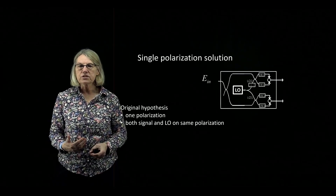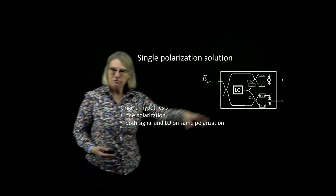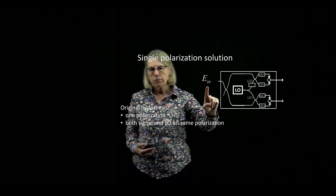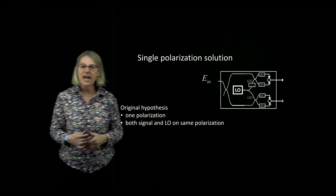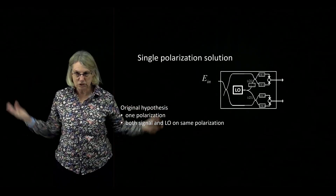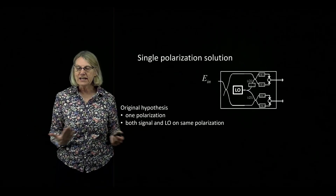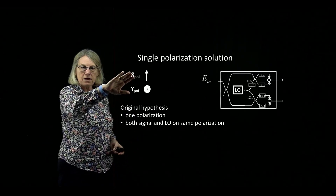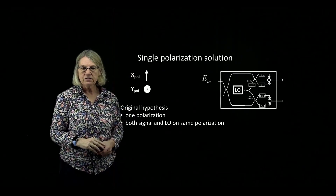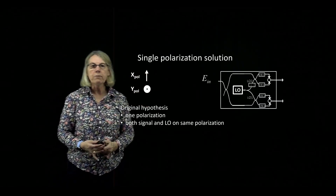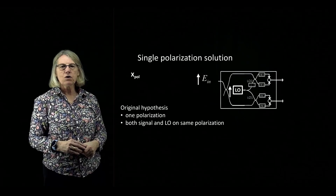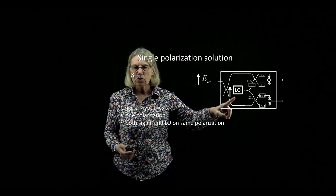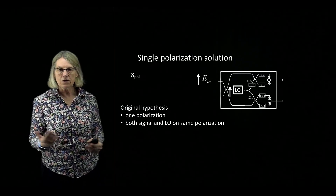To do that, we're going to start with the single polarization solution illustrated here. Our original hypothesis was that one polarization state was present, that the input signal and the local oscillator were tuned to have the same polarization, and we saw the mathematical development showing how this gives us an in-phase and quadrature output. I'll use an arrow for the X polarization and a circle for the Y polarization as notation, and previously we had a single X polarization on both the local oscillator and the input signal.